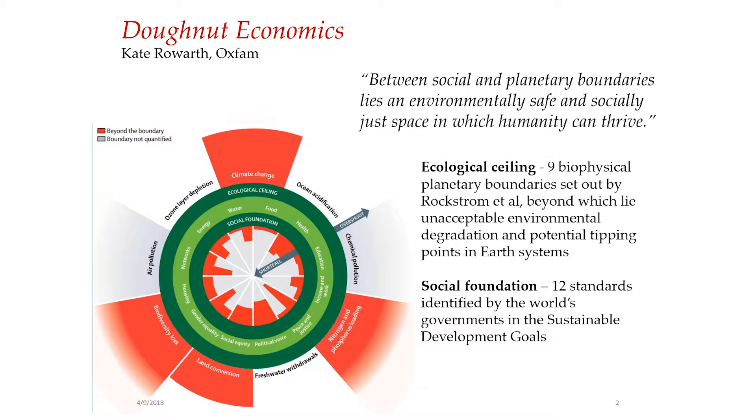This is a simple model to help understand that what we're working towards with sustainability is kind of between our social and planetary boundaries — a safe and socially just space for humanity. In terms of the ecological ceiling, we look at nine biophysical planetary boundaries, and then the social foundation described by the 12 standards identified through the UN sustainable development goals. We know that we have already exceeded at least four of these planetary boundaries, one of which is climate change.